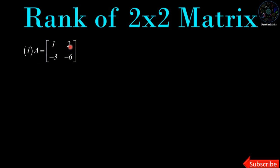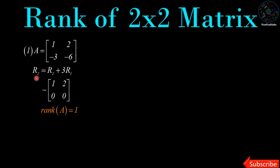Example 1: A is equal to [1, 2; -3, -6]. We are going to find the rank of matrix A. For that we convert matrix A into its row echelon form and then calculate the number of non-zero rows. Apply the row operation R2 = R2 + 3R1, that means multiply the first row by 3 and add to the corresponding entries of the second row. So 3 plus (-3) = 0 and 6 plus (-6) = 0. This is the row echelon form of matrix A, which contains only one non-zero row, therefore rank is 1.